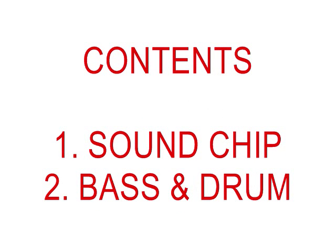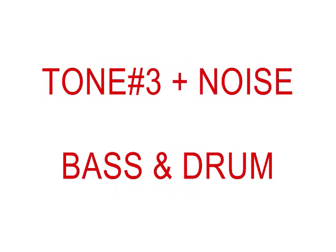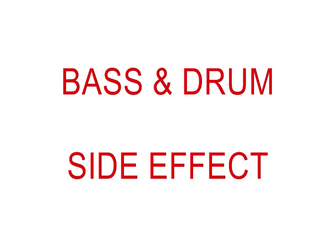Without too much details, let's talk first about the sound chip. The sound chip is capable of three tone channels and one noise channel, but one tone channel and the noise channel can be mixed to do bass and drum instruments. This leaves two tone channels left for the melody. The unwanted side effect of using the special drum and bass instrument setting is not being able to play bass and drum at the same time.